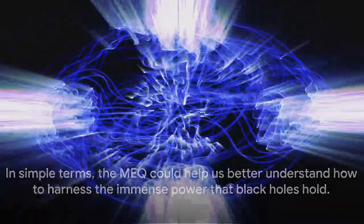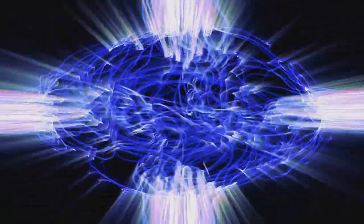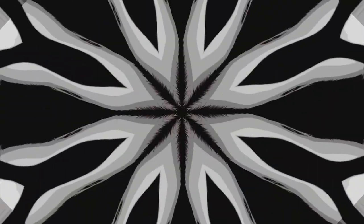Hawking radiation describes how black holes can lose mass over time, which impacts their stability and energy output. By applying the MEQ, we might be able to gain a deeper understanding of this process and find ways to mitigate rapid mass loss, thus making energy extraction from black holes more efficient.